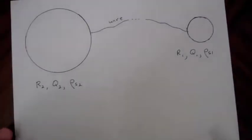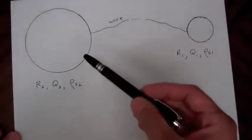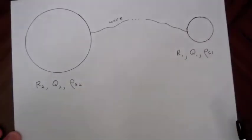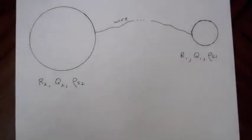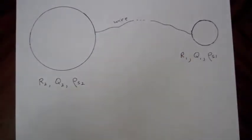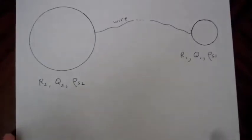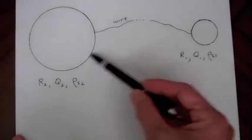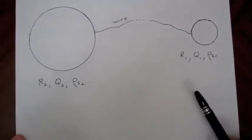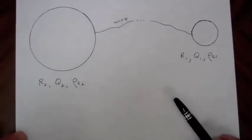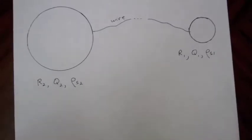The potential difference between an object and infinity is how much work it takes to bring one coulomb of charge from infinity to the object. For convenience we set the potential at infinity as zero, so the potential of the object is just the work it takes to bring one coulomb of charge from infinity to the object.